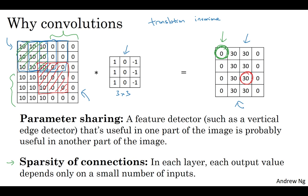And the convolutional structure helps the neural network encode the fact that an image shifted a few pixels should result in pretty similar features and should probably be assigned the same output label.